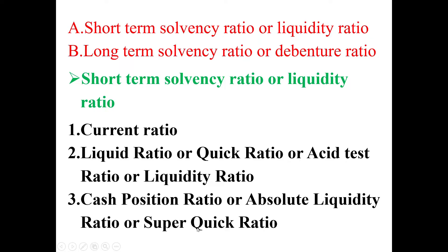Under Short-Term Solvency Ratio, we will discuss three ratios: first, Current Ratio; second, Liquid Ratio — also known as Quick Ratio, Acid Test Ratio, or Liquidity Ratio; third, Cash Position Ratio — also known as Absolute Liquidity Ratio or Super Quick Ratio. So short-term solvency ratio has three ratios: Current Ratio, Liquid Ratio, and Cash Position Ratio.